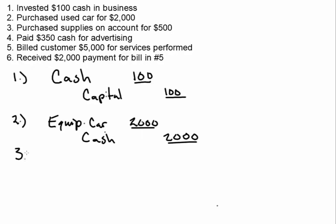Number three: purchase supplies on account. The key here is 'on account' — if we're purchasing something on account, that means we are not using cash, so we're not going to have cash in this transaction. Because we are doing the purchasing, we're going to gain supplies. Supplies being an asset will go up, so we put supplies $500. And then what do we credit? We have a liability going up — in this case it's accounts payable, A-P for shorthand — and that's for $500.